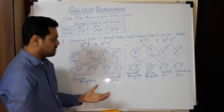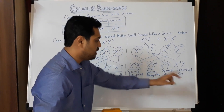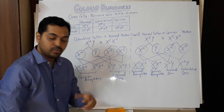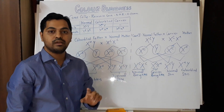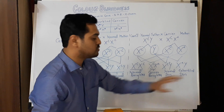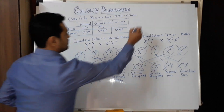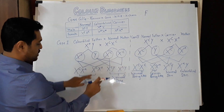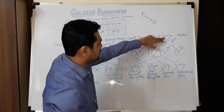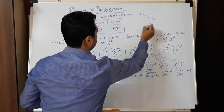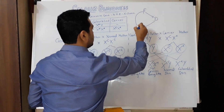If an exam question asks how many percentage of children suffer from colorblindness, the answer is 1 out of 4, that is 25%. But if the question asks how many percentage of sons suffer from colorblindness, the answer is 50%, because it is 1 out of 2 sons. To summarize Cases 1 and 2: the gene was transmitted from the colorblind father to the daughter, and when that carrier daughter became the mother, the gene was transmitted to the son. We conclude that the grandfather transmitted the gene to the grandson.